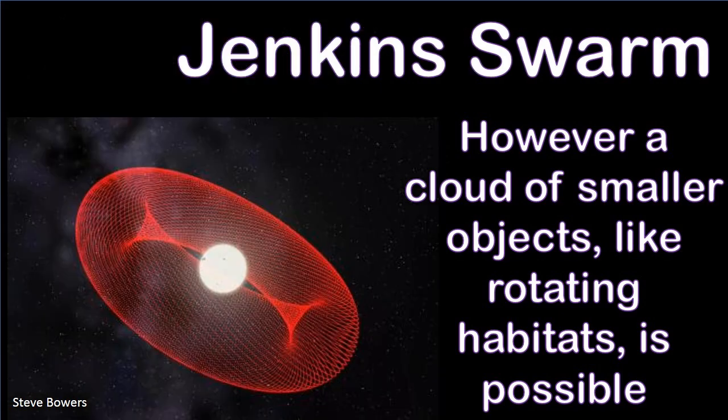Dyson Swarms are also a little bit unstable, so we also will occasionally talk about a Jenkins Swarm, which is sort of a very large donut around the star of various swarm objects rotating bodies over the equator. These don't follow circular orbits though, they follow a slightly elliptical path that brings them a little bit closer and further away from the sun, and you'd probably use that to simulate your seasons.